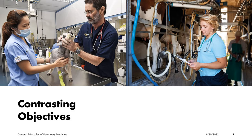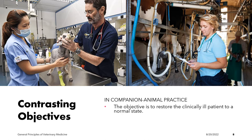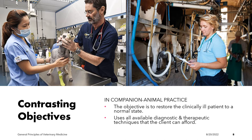If we compare two veterinary practices — companion animal practice and food producing animal practice — we can say they have contrasting objectives. In companion animal practice, the objective is to restore the clinically ill patient to a normal state, using all available diagnostic and therapeutic techniques that the client can afford.